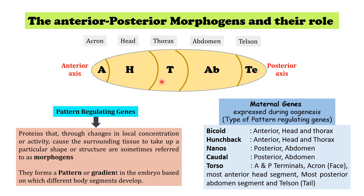The sequence of these body segments is determined by the pattern or concentration gradient of the morphogens. One type of pattern-regulating genes are maternal genes expressed during oogenesis. The five most important maternal genes are: bicoid and hunchback, which are involved in anterior axis formation and head and thorax formation; nanos and caudal, which help in formation of the posterior axis and abdomen; and torso, which helps in formation of anterior and posterior terminal segments — acron anteriorly and telson posteriorly.